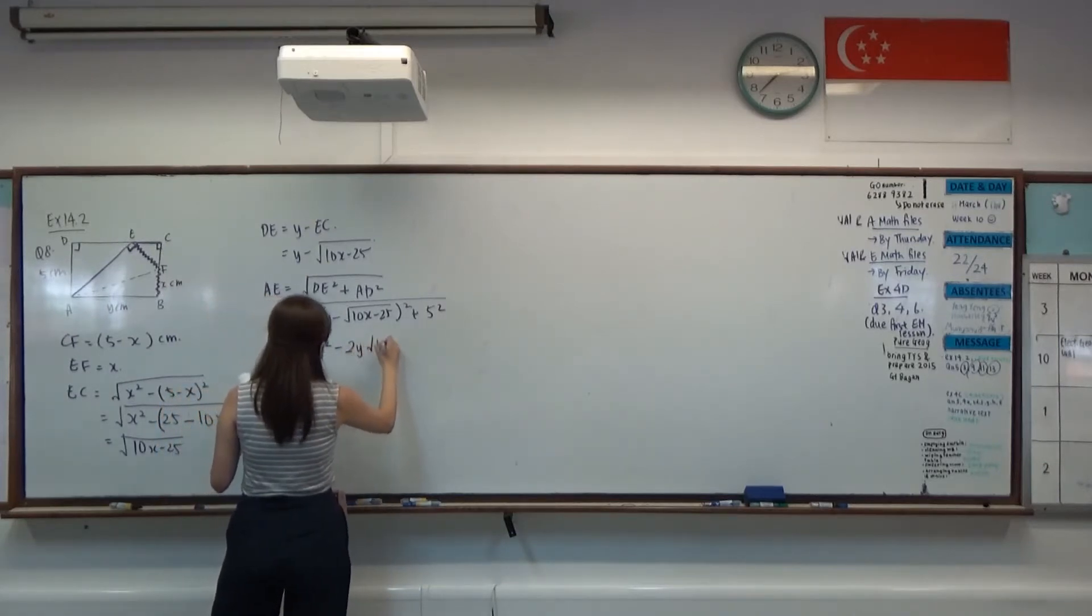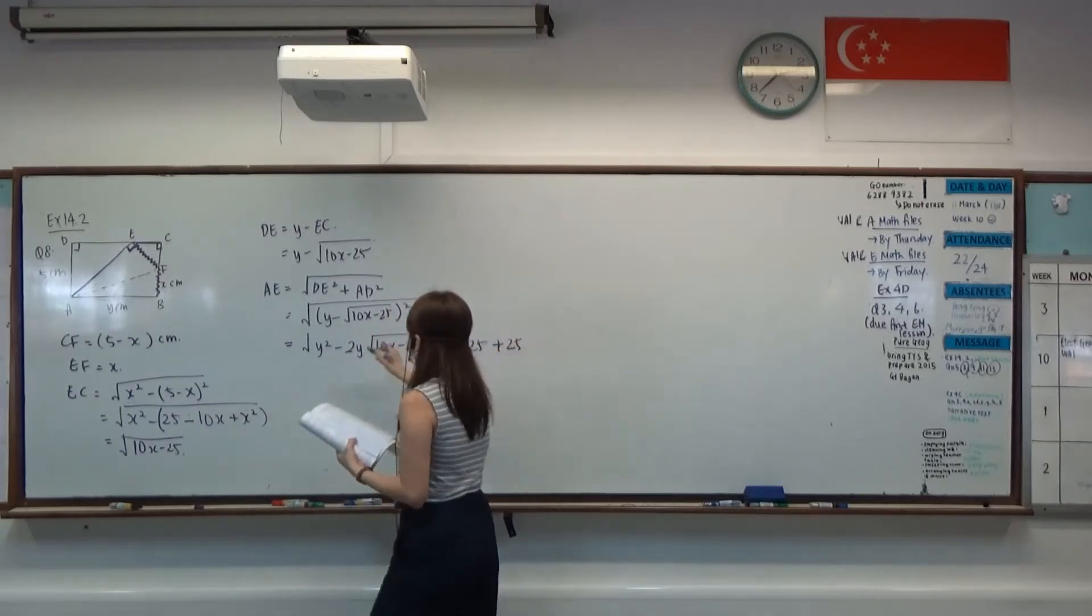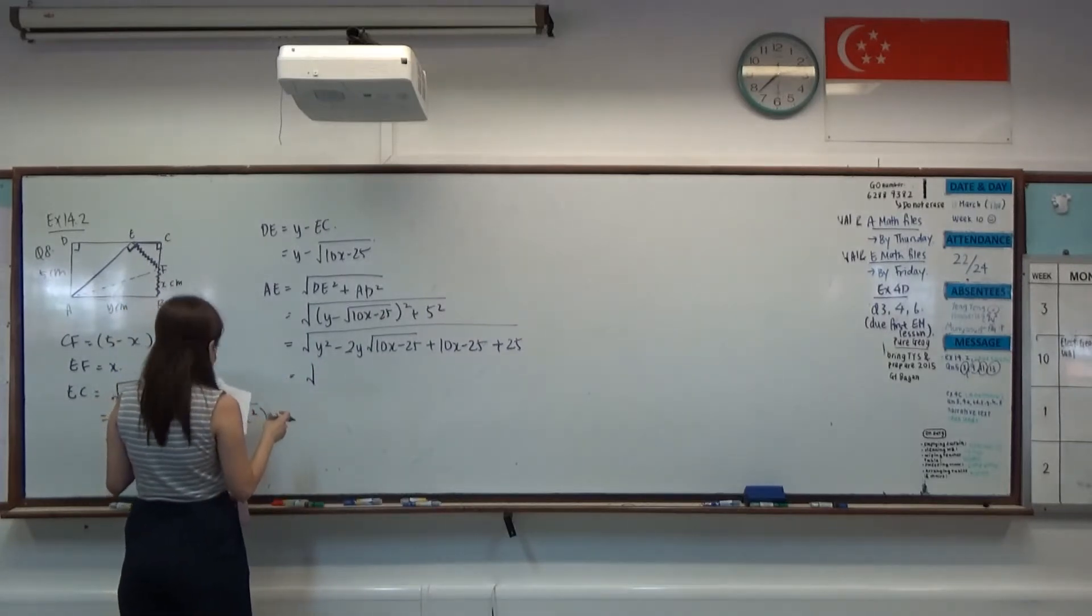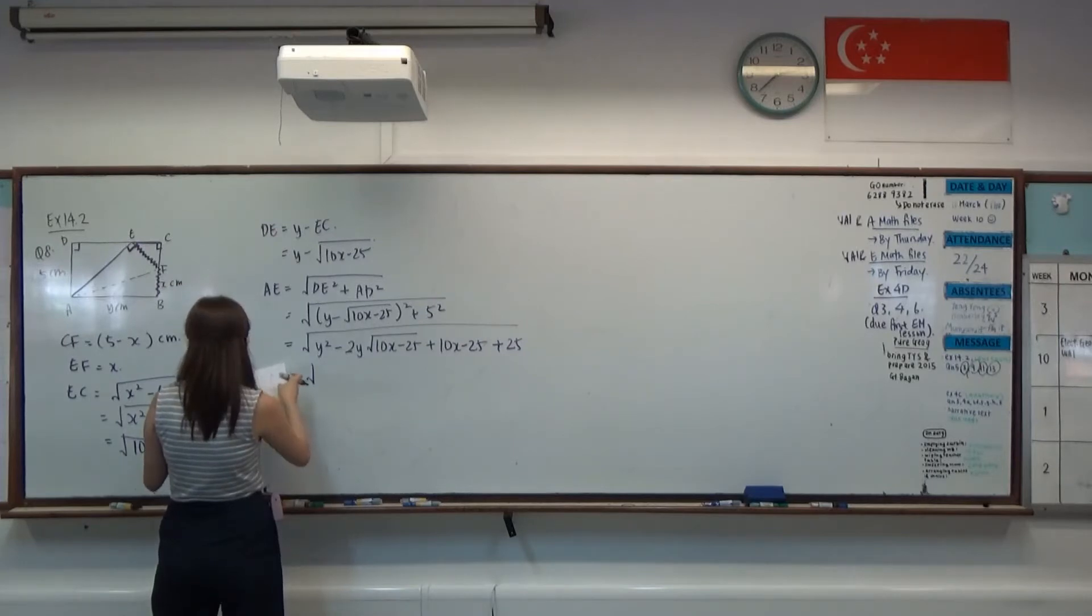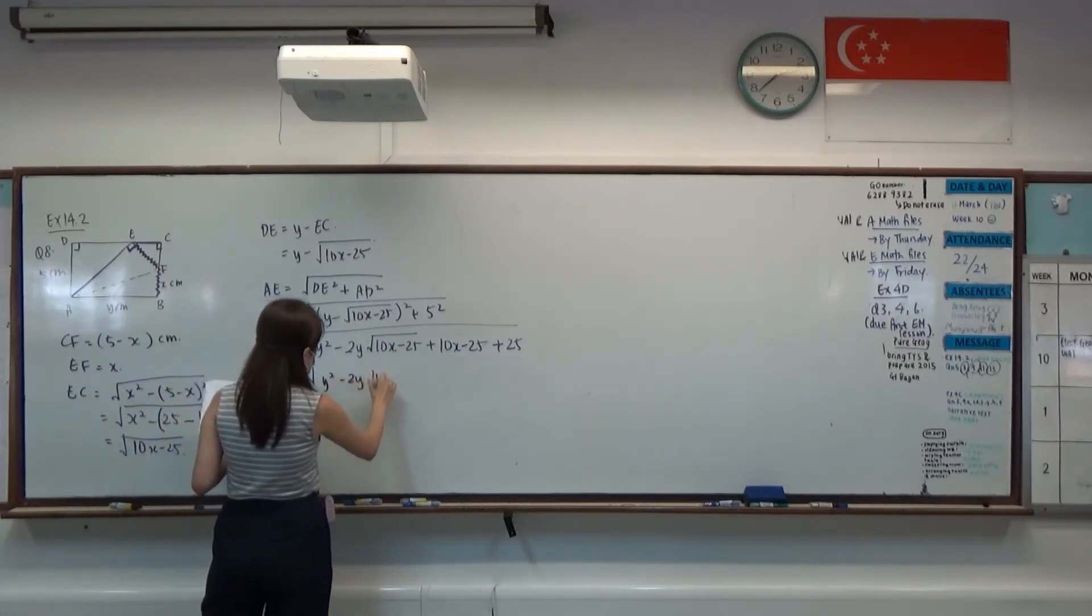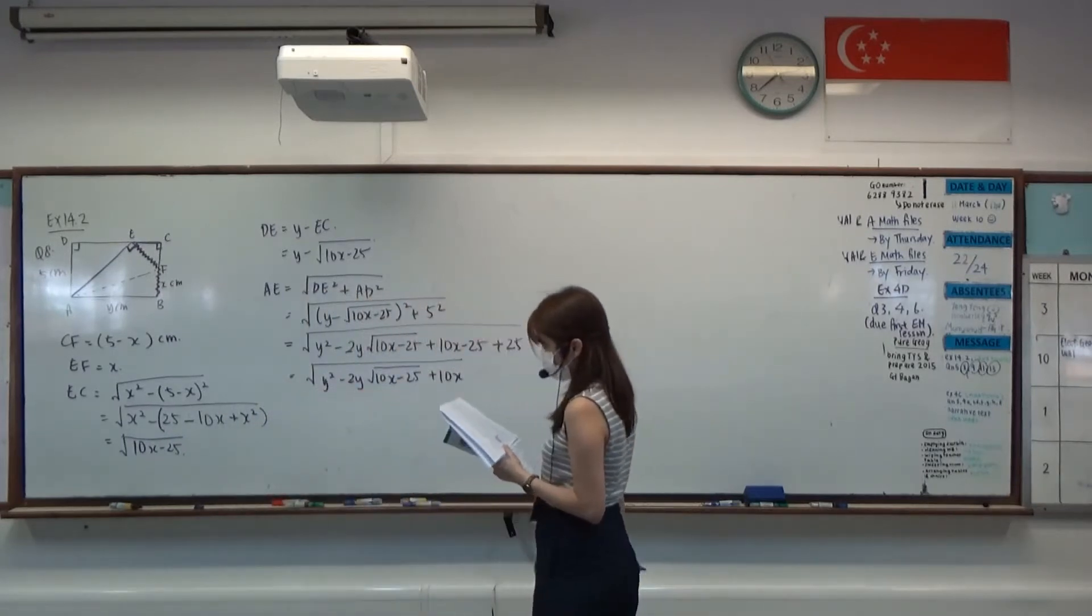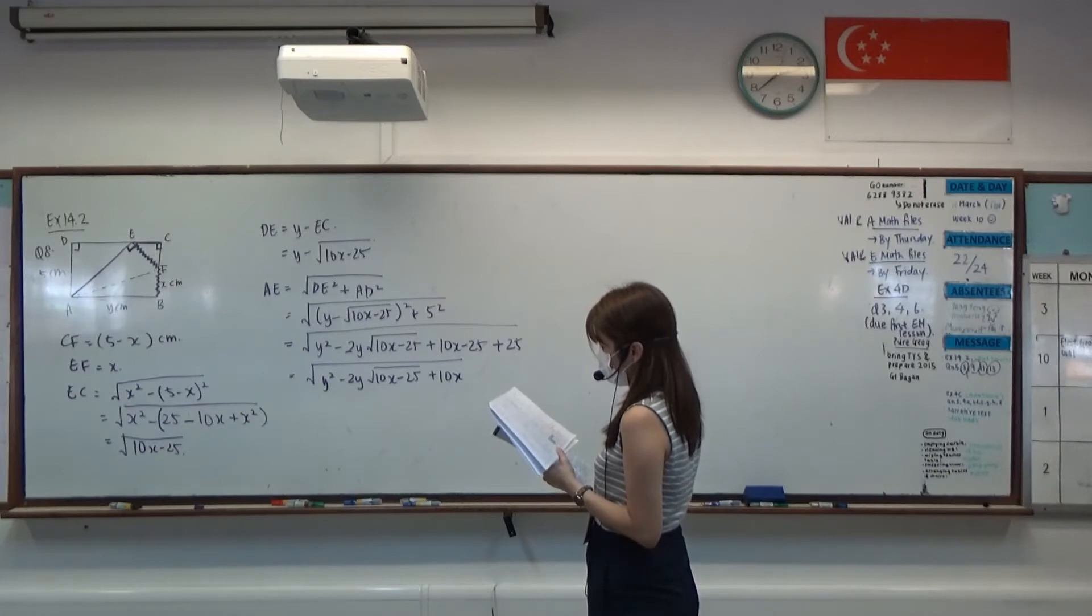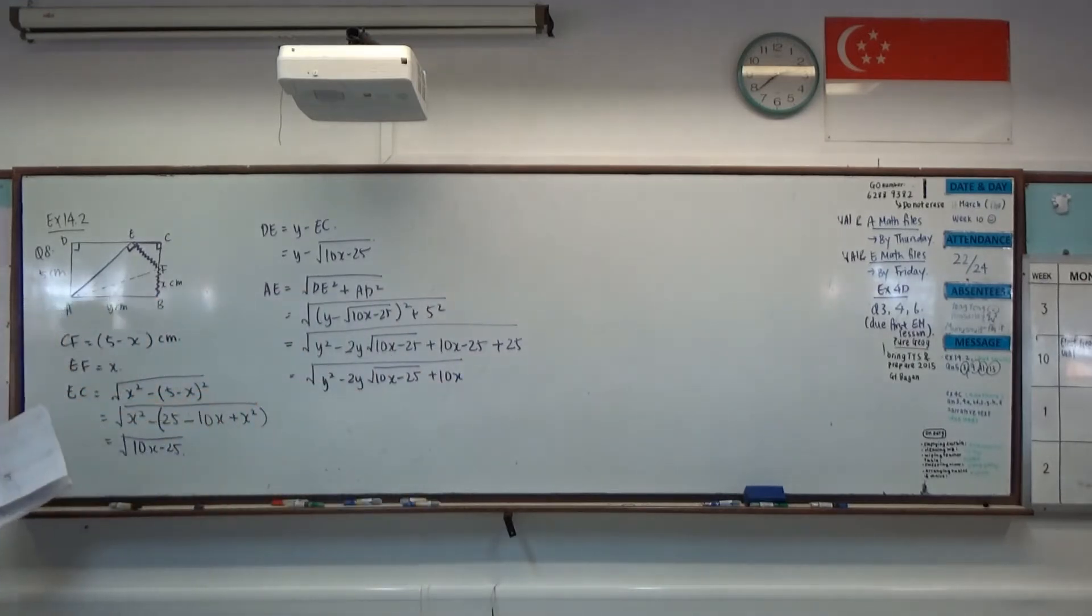So DE would be this, and then after that, AE would be our square root of DE squared plus AD squared.